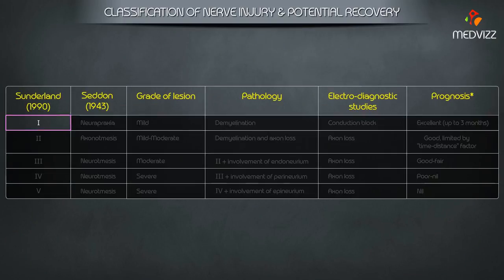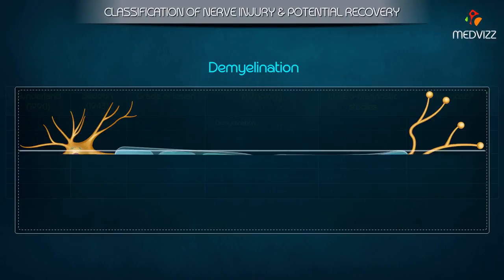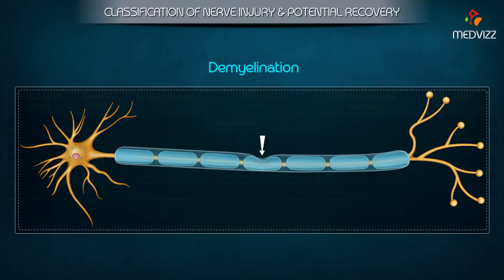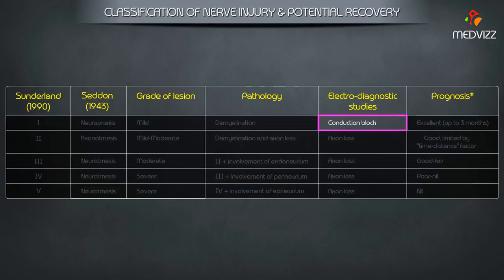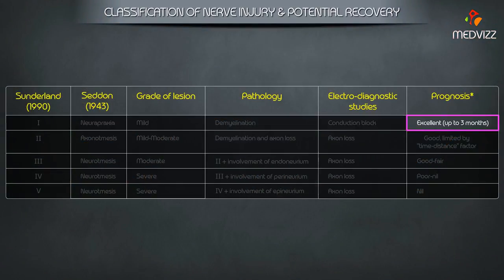Grade 1 in the Sunderland Classification corresponds to Neuropraxia in the Seddon Classification. The grade of lesion is mild. Pathology is demyelination. Electrodiagnostic studies show conduction block. Prognosis is excellent, up to three months.